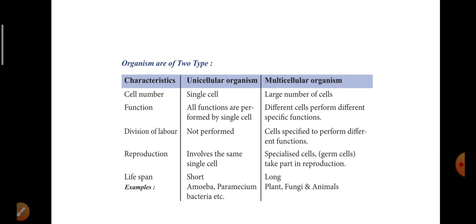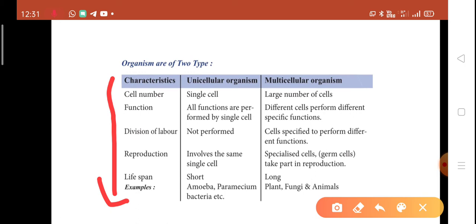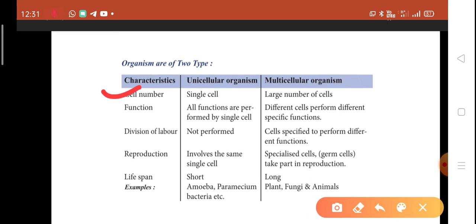Now, there are some characteristics. How can we differentiate unicellular and multicellular organisms? You can see in the table: this side has the characteristics, this side unicellular, and this side multicellular. First is cell membrane and cell number. In unicellular organisms, cell number is single. In multicellular, there are large numbers of cells. One single cell versus many cells.